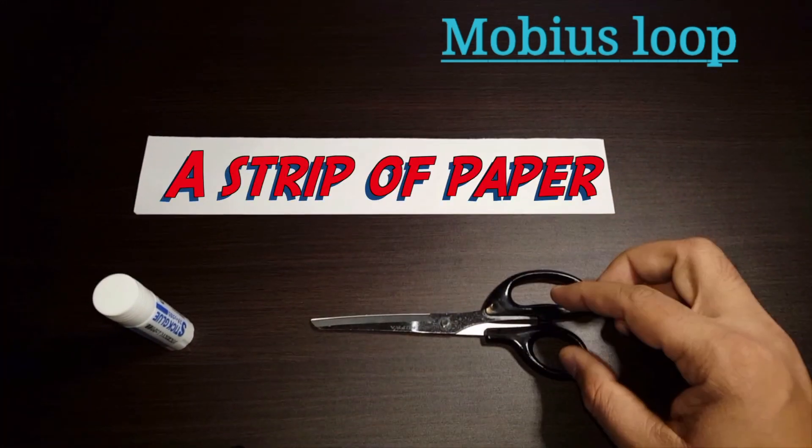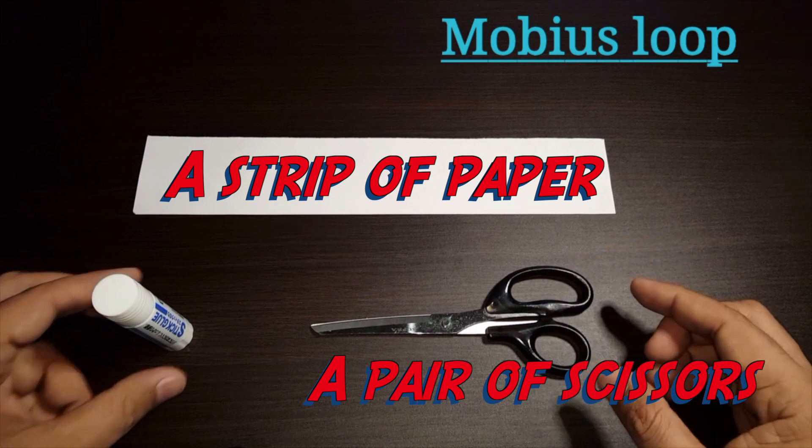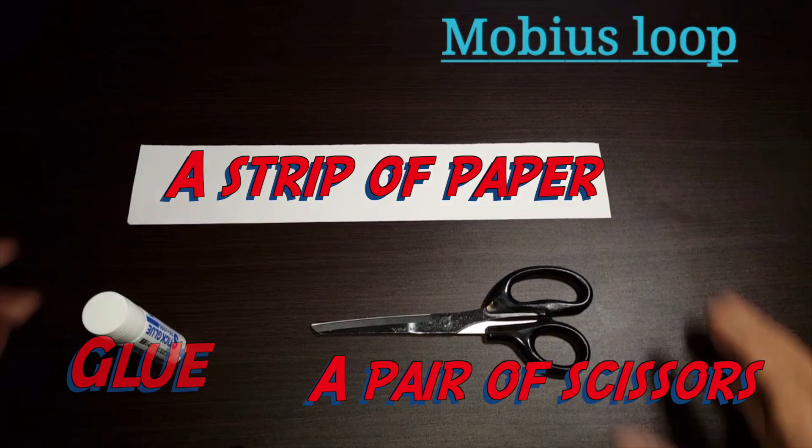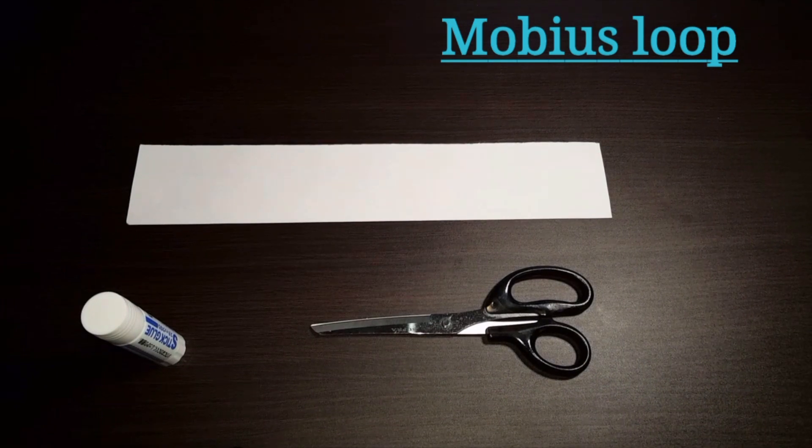First, a strip of paper, second, a pair of scissors and third, something to glue with. And what we are going to do today is what we call the Mobius loop.